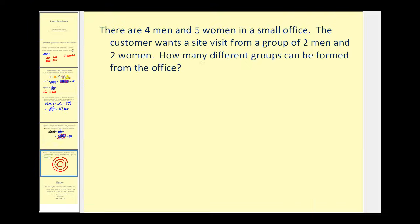Let's take a look at one more. There are four men and five women in a small office. The customer wants a site visit from a group of two men and two women — how many different groups can be formed? Again the order doesn't matter because we're forming groups. But there are really two events going on: we have to choose the men and then also choose the women. So we'll find the number of ways to select the men and multiply it by the number of ways to select the women.